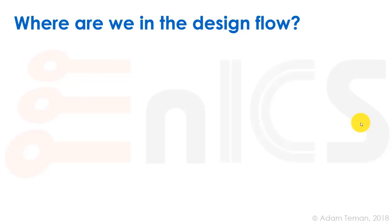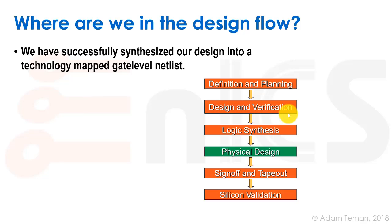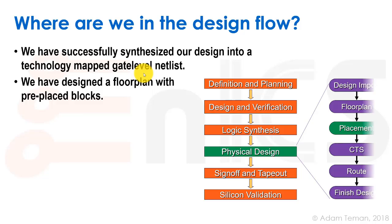Let's remember where we are in the complete design flow. We started our course talking about the entire flow of making a chip. It started with some definition and planning stages, then RTL design — writing Verilog for synthesis and test benches — and verification. Our course really started at logic synthesis when we synthesized our design into a technology-mapped gate-level netlist, then we moved down to the physical design stage, which we've been dealing with for the last two lectures.